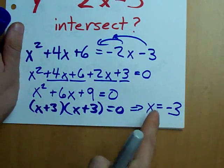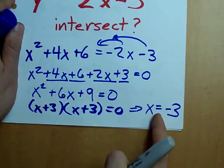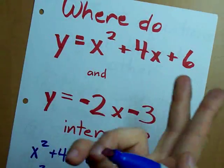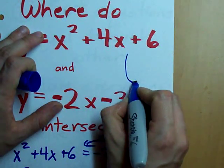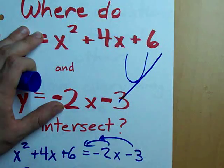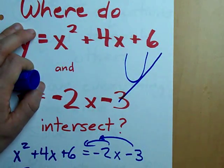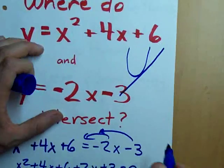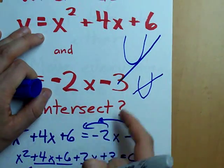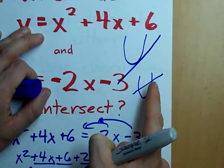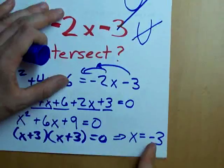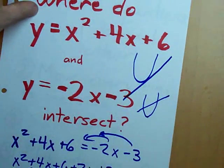You know what that means? It means it only intersects the parabola once. These two only meet once. It's totally possible for a parabola and a line to meet only once, if it just grazes it like that. Normally, you expect a parabola and a line maybe to meet like that. Two points of intersection. Not this time. Only one x value comes out. Only one point of intersection.